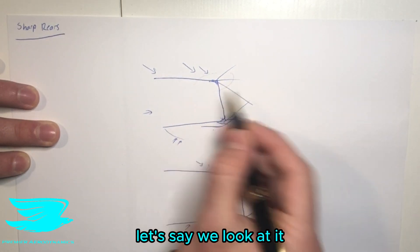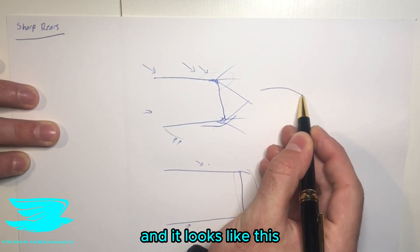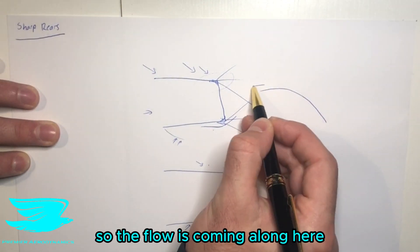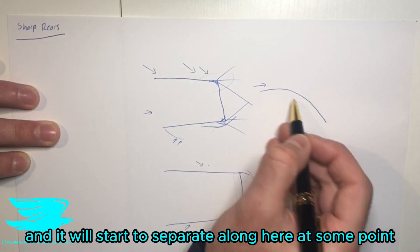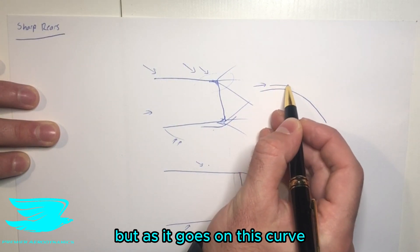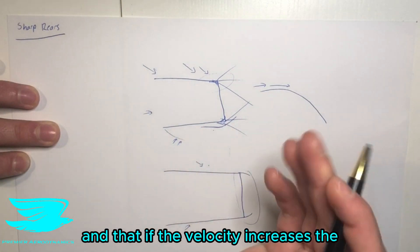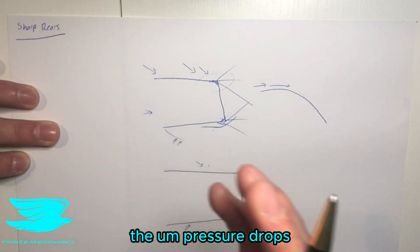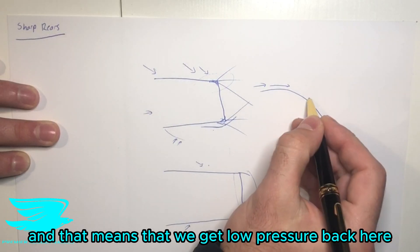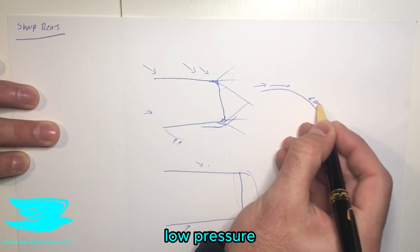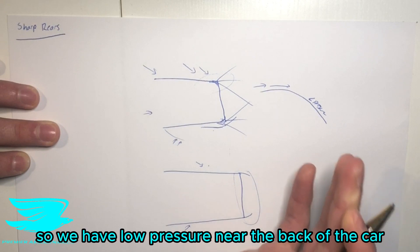So let's say we blow this section up. The flow is coming along here and it'll start to separate along here at some point. But as it goes along this curve, the velocity is going to increase, and we know that from Bernoulli's equation, for example. And if the velocity increases, the pressure drops.